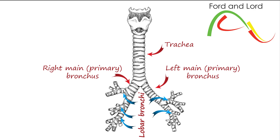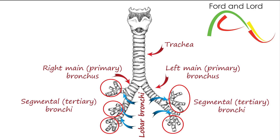Each lobar bronchus divides further into segmental bronchi, also known as tertiary bronchi. Segmental bronchi supply air to bronchopulmonary segments of the lungs.